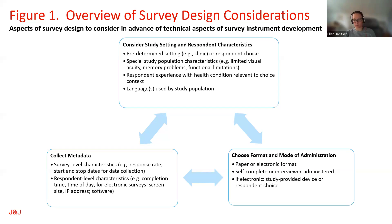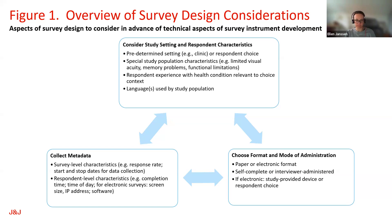You also need to consider the format and mode of administration — paper or, more commonly now, electronic format. There are also questions regarding the metadata you need to collect to get a holistic view of preferences: survey-level characteristics such as response rates and how quickly respondents complete the survey, as well as respondent-level characteristics like completion time, screen size, and what software is being used.